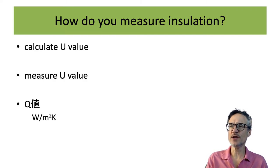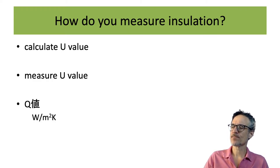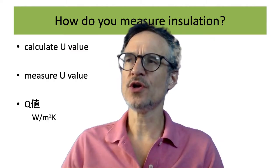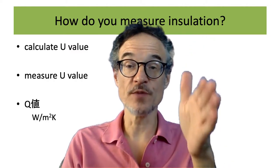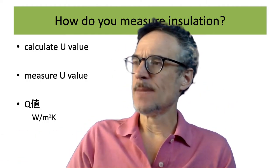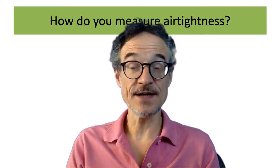In Japan, the Q-value is often used to measure insulation — this is how much heat the building loses through the area of wall. You can measure it by wall area or against the floor area of the building. How do you measure airtightness?